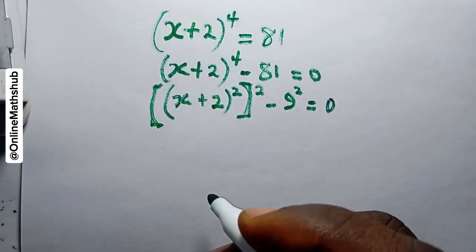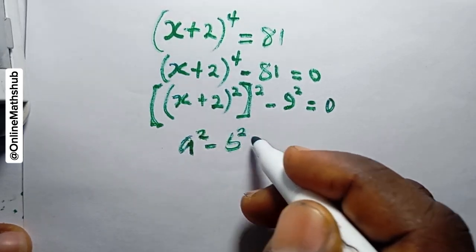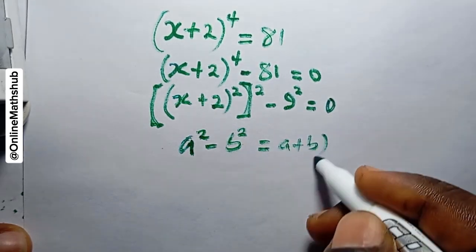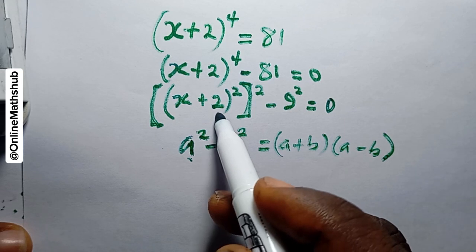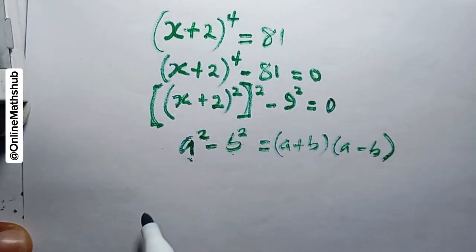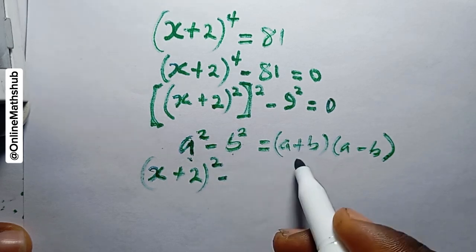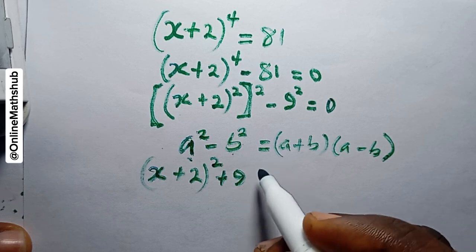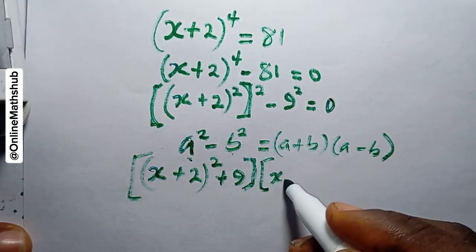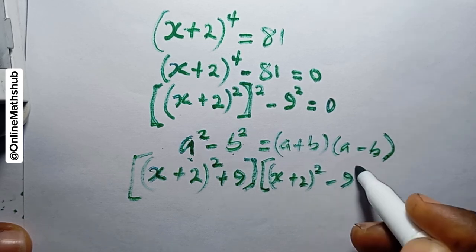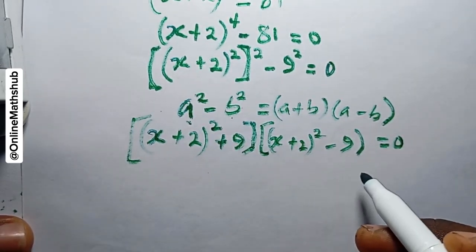This makes it easier to simplify. We use the difference of squares identity: a² minus b² expands to (a + b)(a - b). In this case, a is (x + 2)² and b is 9. So we get [(x + 2)² + 9] multiplied by [(x + 2)² - 9] equals zero.